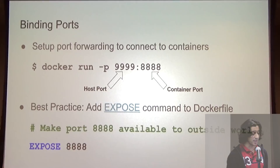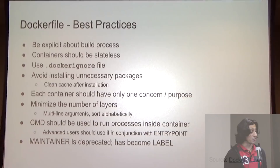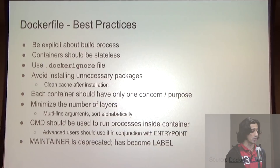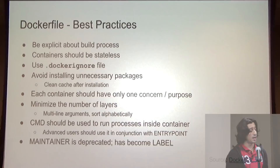Some more Dockerfile best practices: be explicit about your build process — it's a lot easier to figure out what you did after two or three weeks. Containers should be stateless. Avoid installing unnecessary packages. Each container should only have one concern, and minimize the number of layers in your image. If you look at older Dockerfiles you'll see a MAINTAINER command, but that's been deprecated — use LABEL going forward.